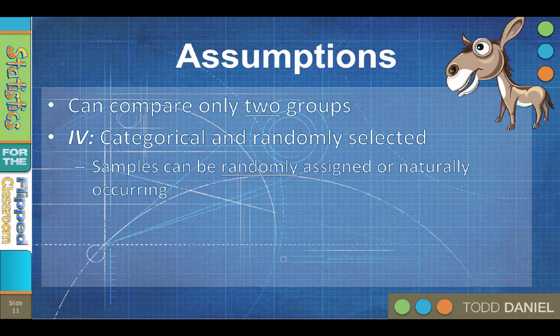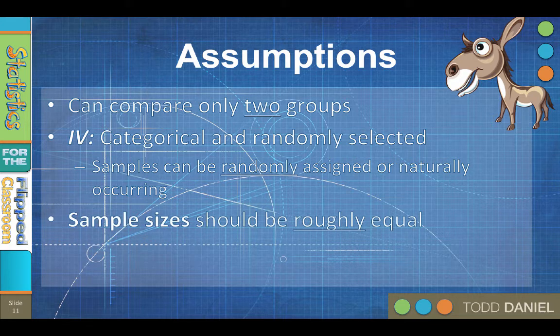Now on this next assumption, you have a little wiggle room. The sample sizes should be roughly equal. The sample sizes for each group do not have to be exactly the same, but the n should be roughly equal.